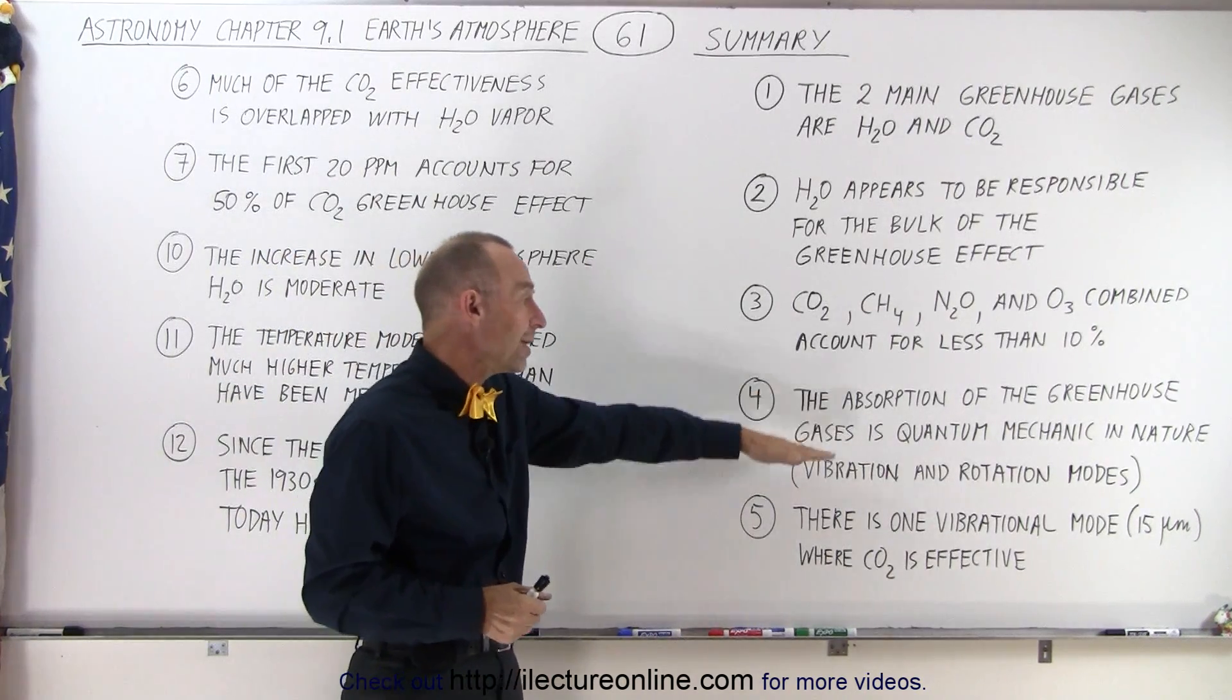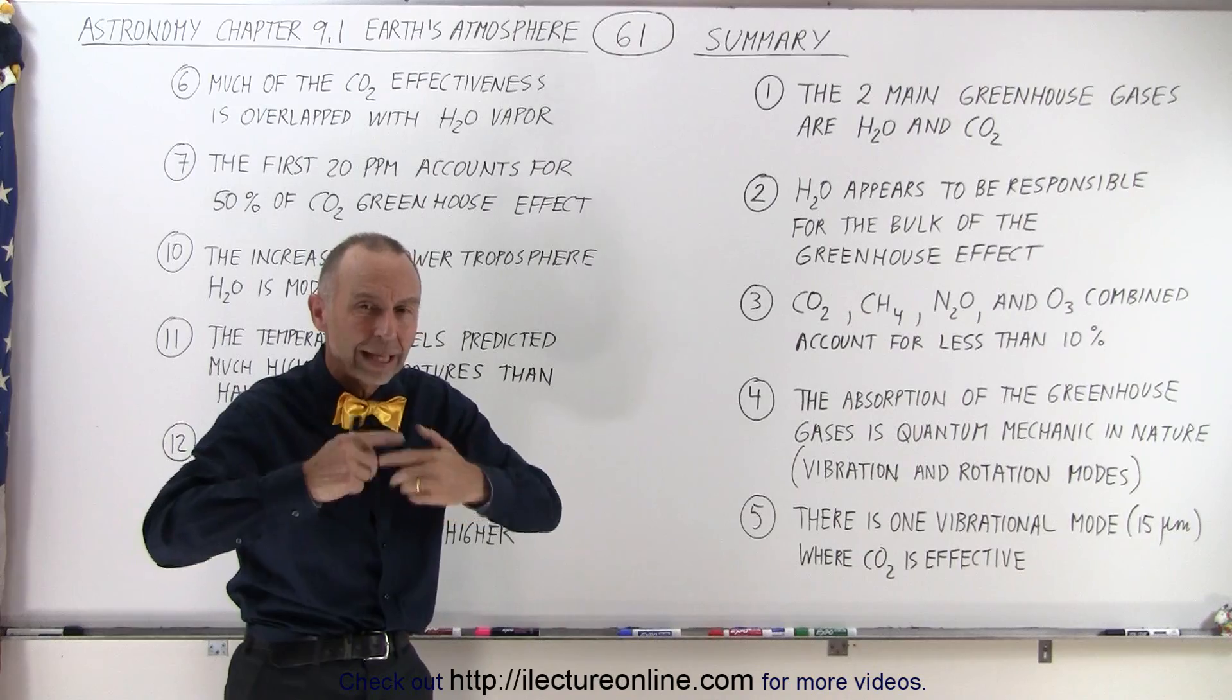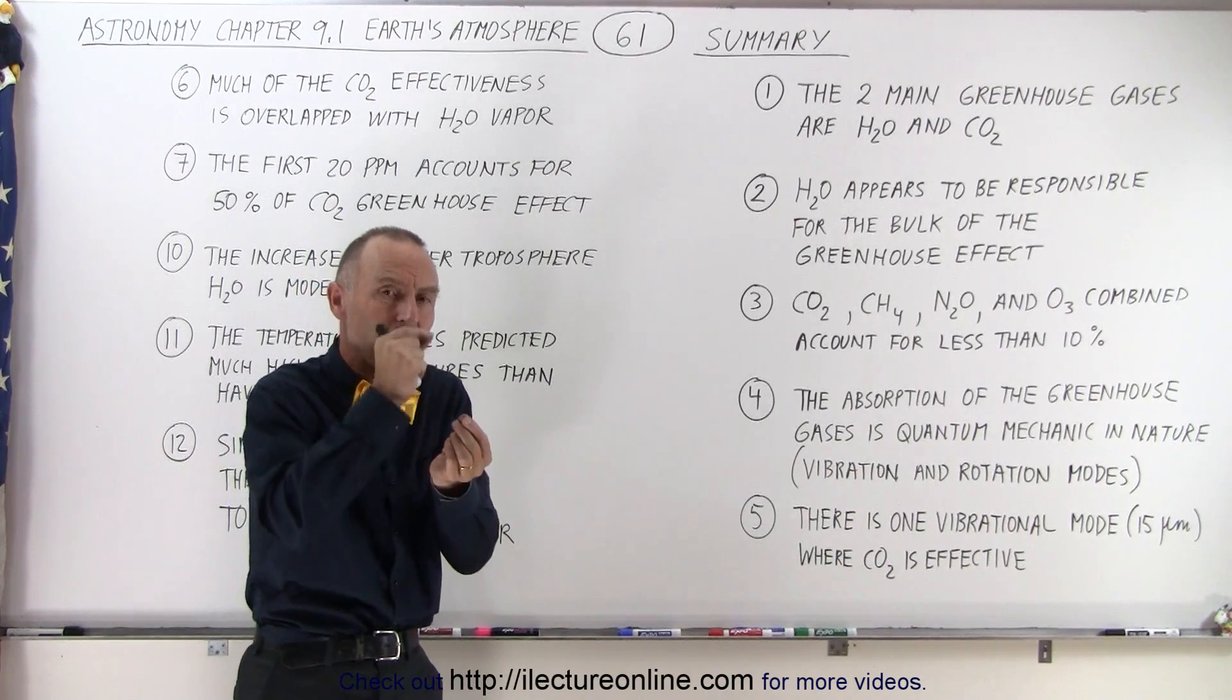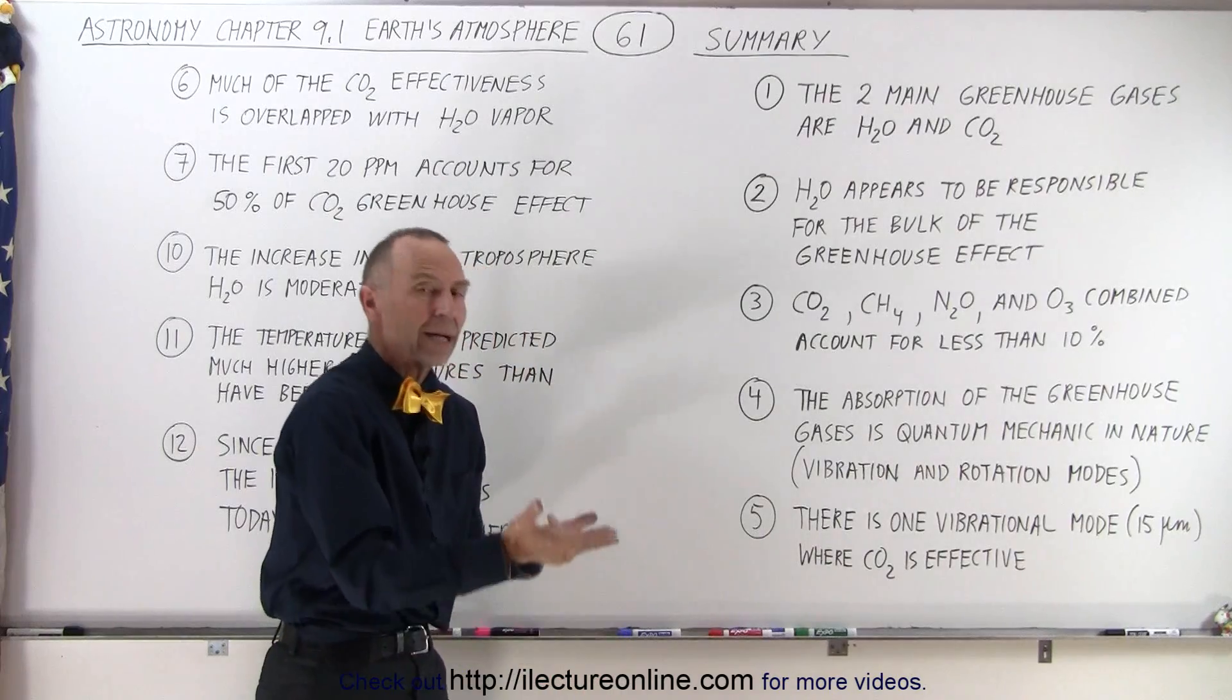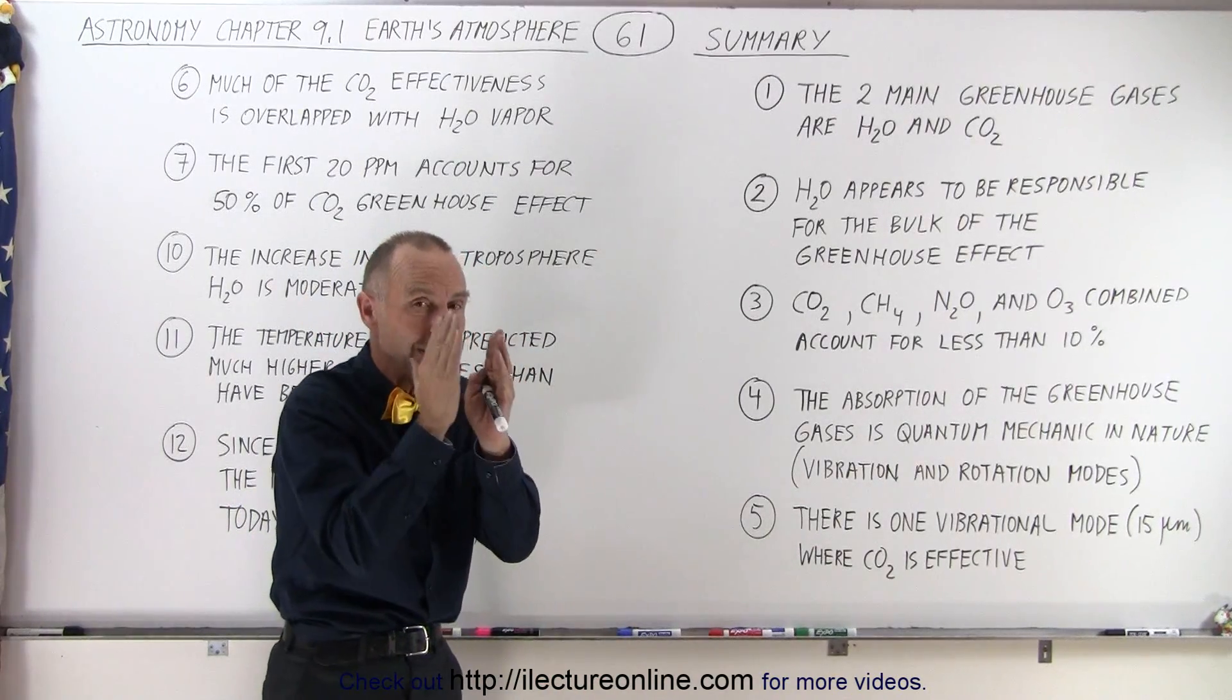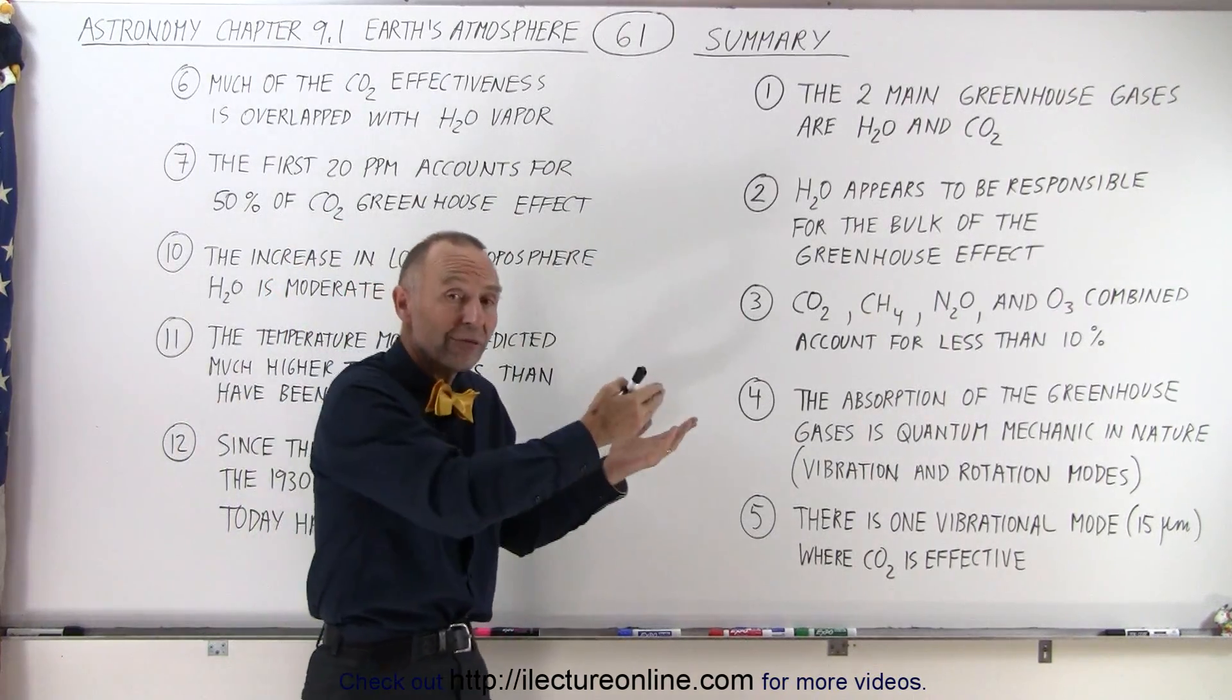The absorption of the greenhouse gases is quantum mechanic in nature. What that means is there is what we call vibrational and rotational modes that are quantum mechanic. They can only exist in certain quantum mechanic states, which means that they can only absorb certain frequencies of the radiation coming back up from the Earth. And because of that, each greenhouse gas is only a certain type of snippet of the total radiation band that they can absorb. And that is why some are more effective than others.